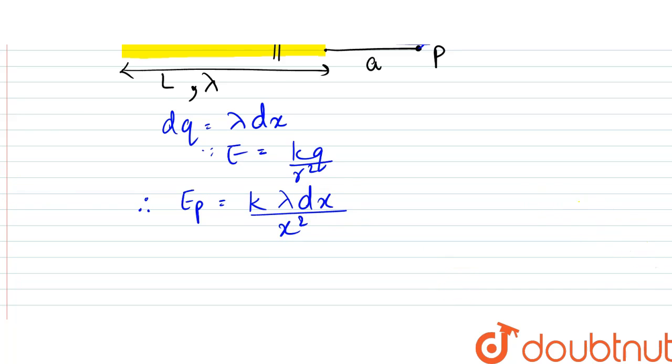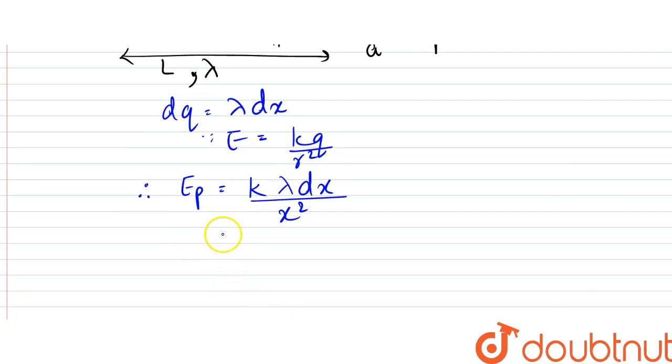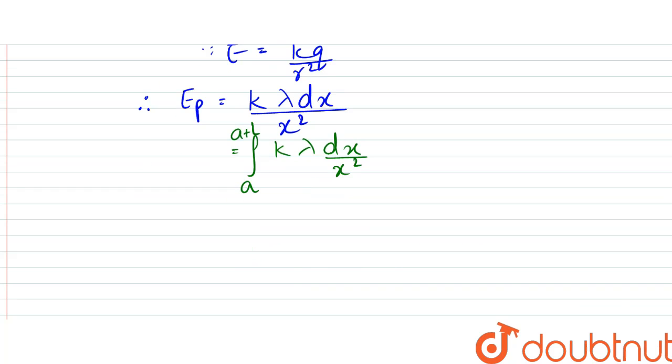Now, from here, what we could say is that when we integrate this from A to A plus L, k lambda dx by x square. So k lambda comes out, since that is constant.